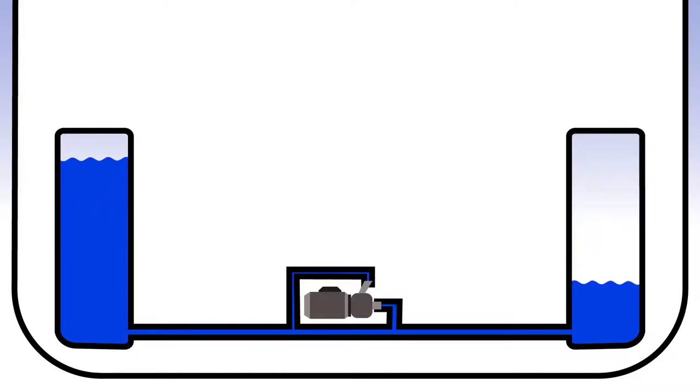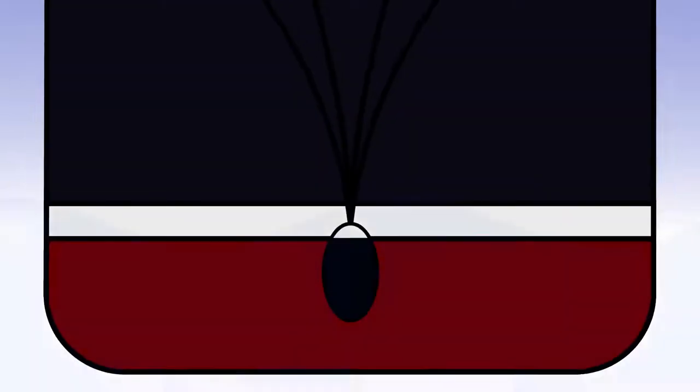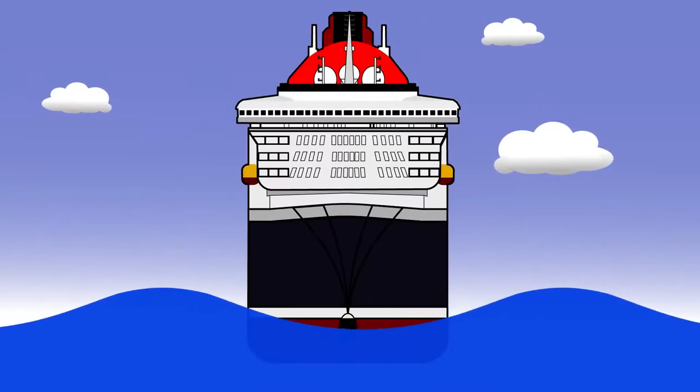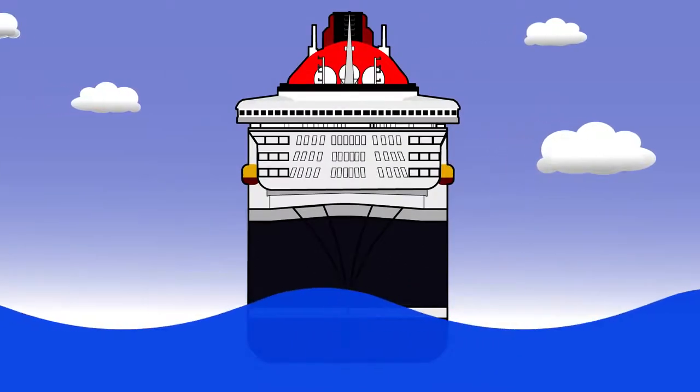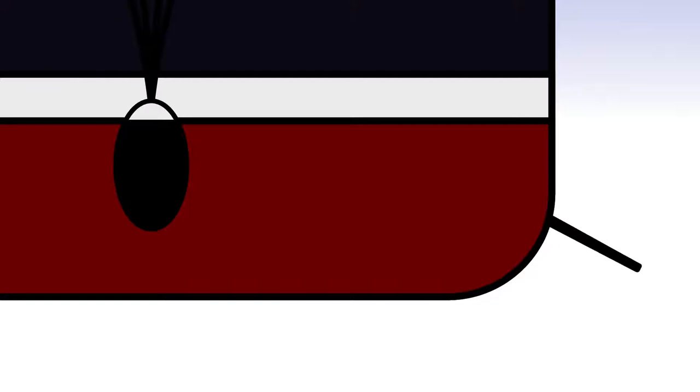For that, we're left with the fin stabilizer. This is actually the most common form of stabilization that I've encountered on cruise ships. The system basically consists of a hydraulically operated wing that extends out underwater. You'll notice it looks similar to the bilge keels that we discussed earlier.